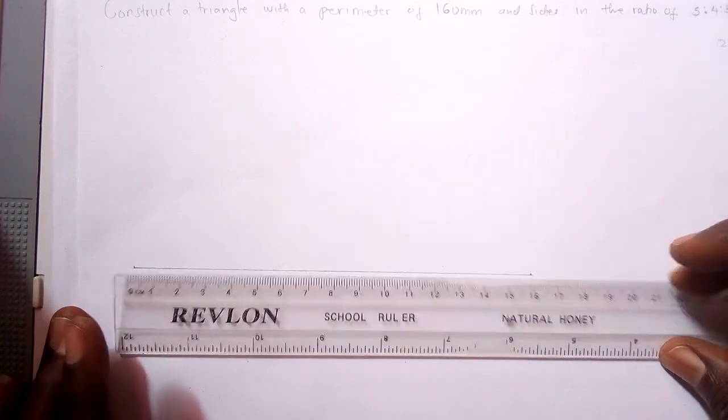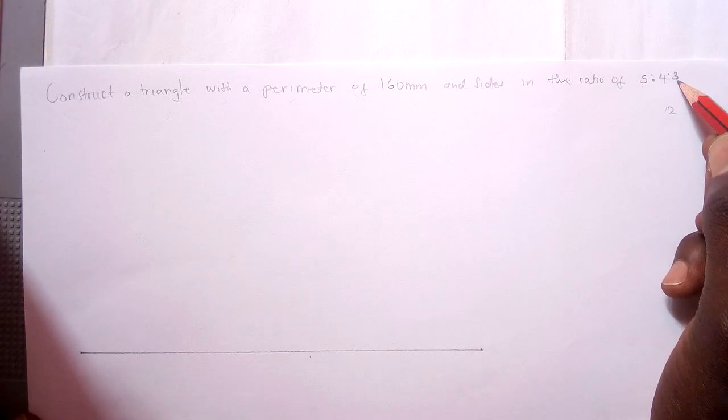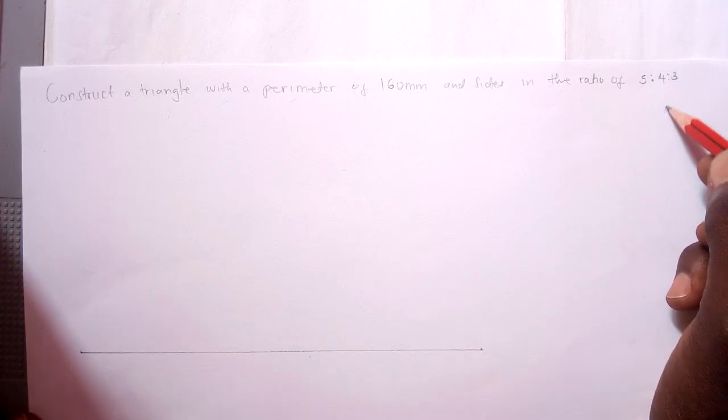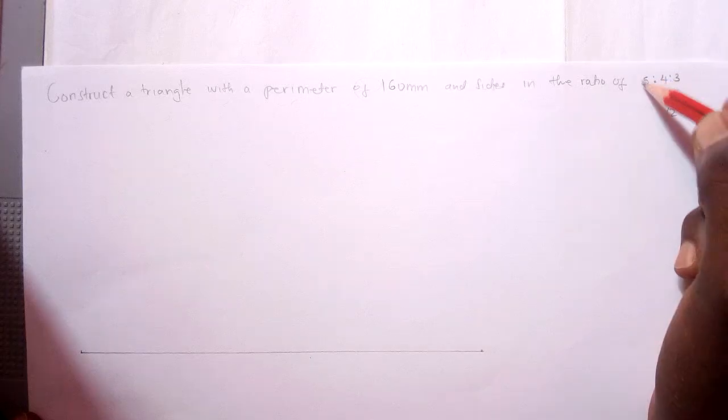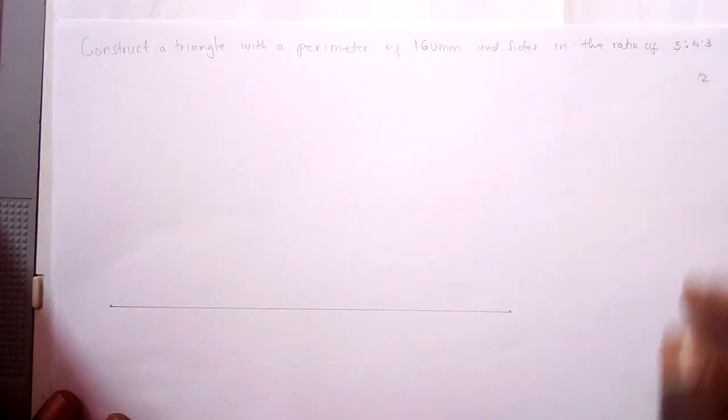After measuring the 16 centimeters, now we are going to divide this line into the total number from the ratio. The ratio is 5:4:3, which is equal to 12 when you totalize this. So we have divided this line into 12 equal parts.